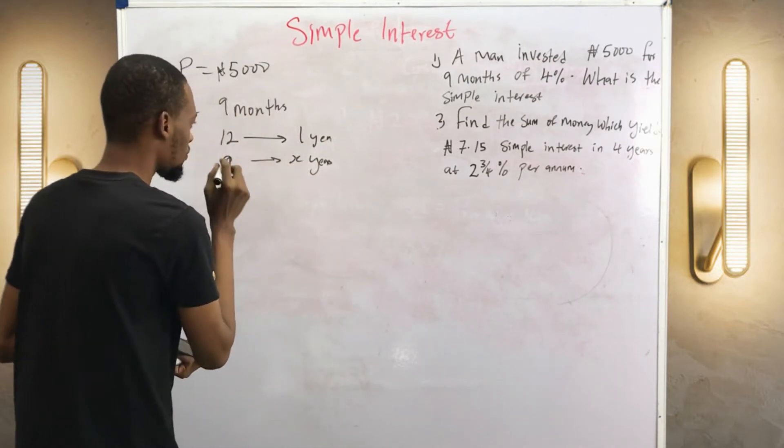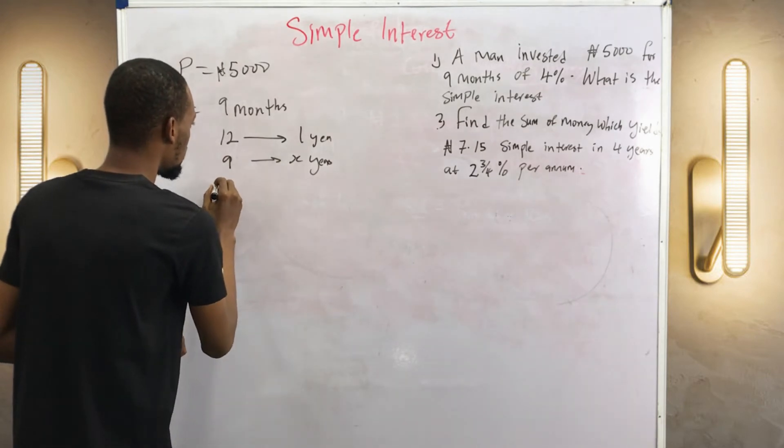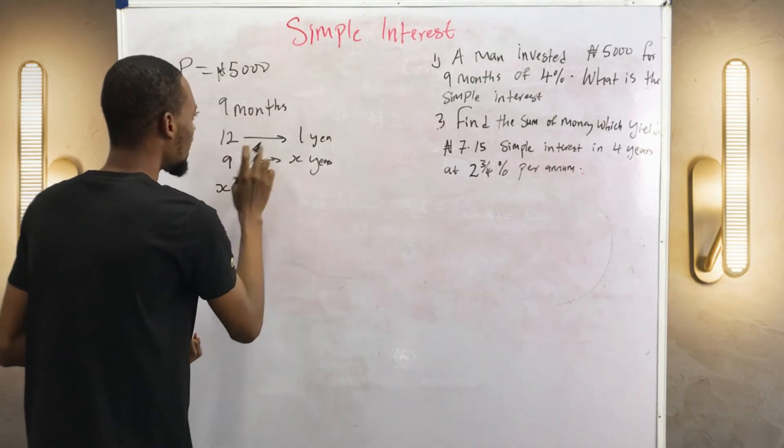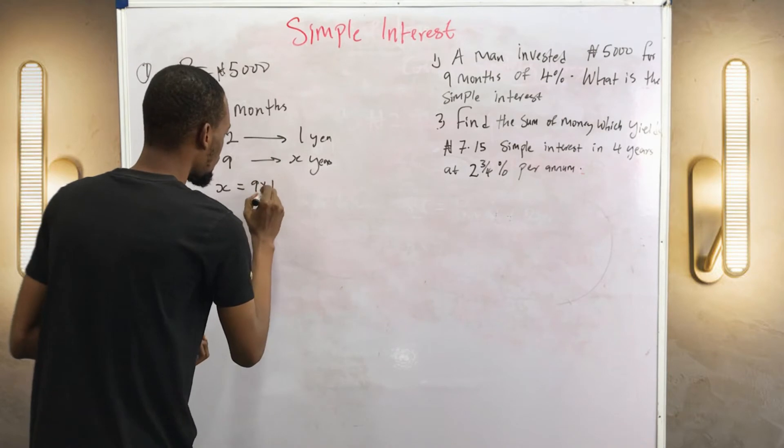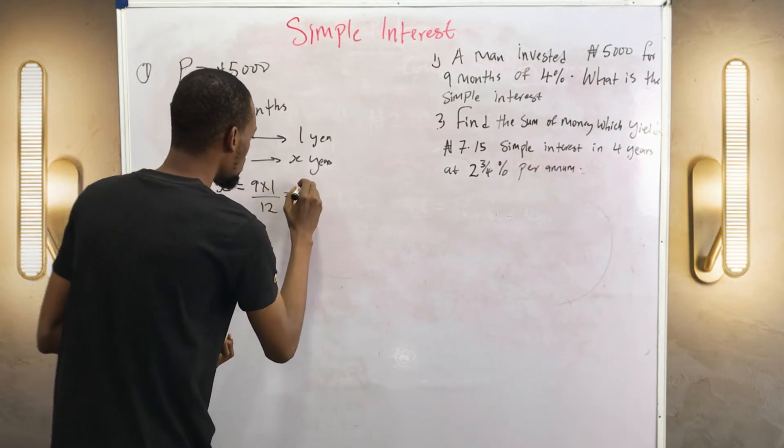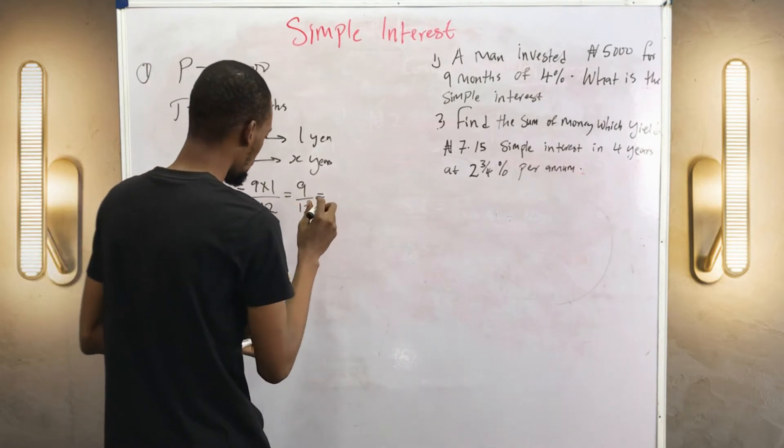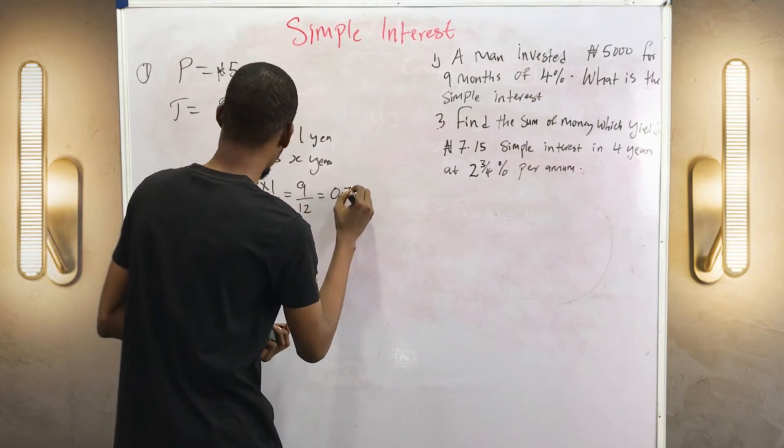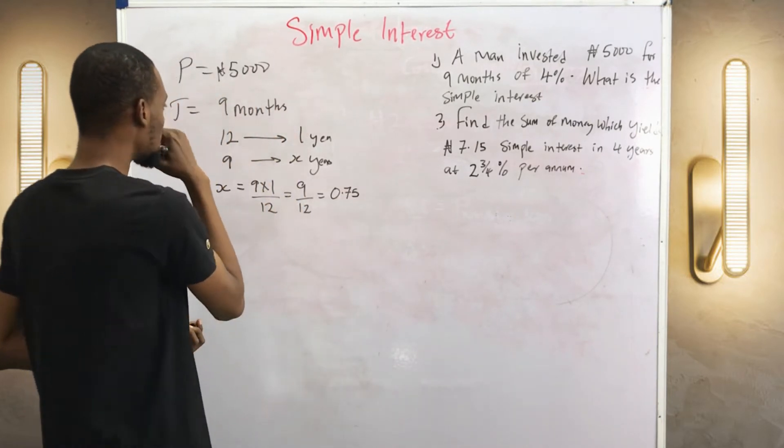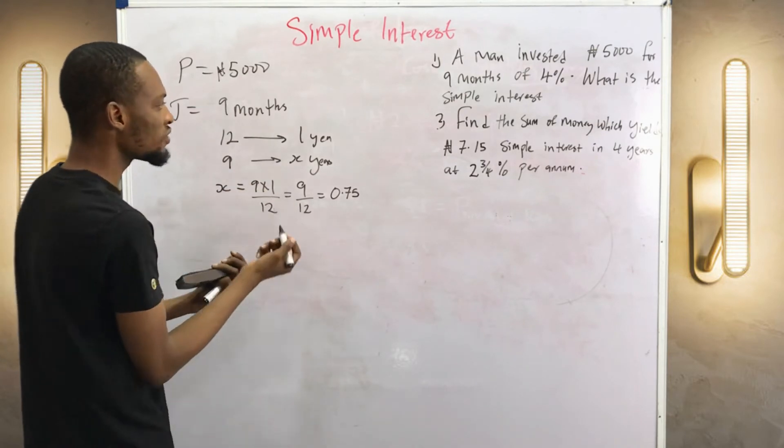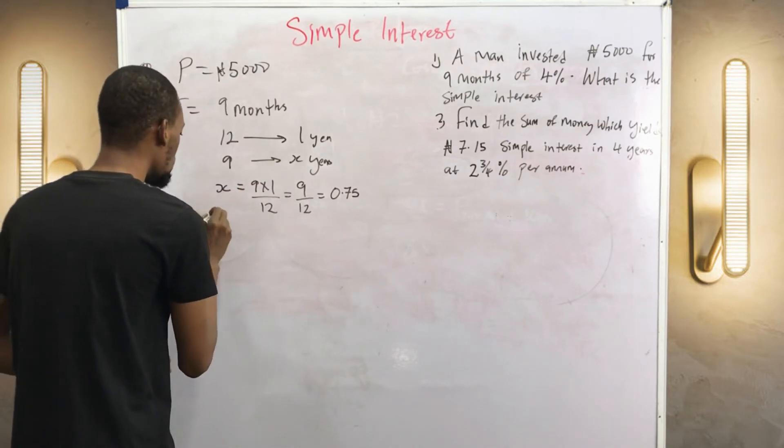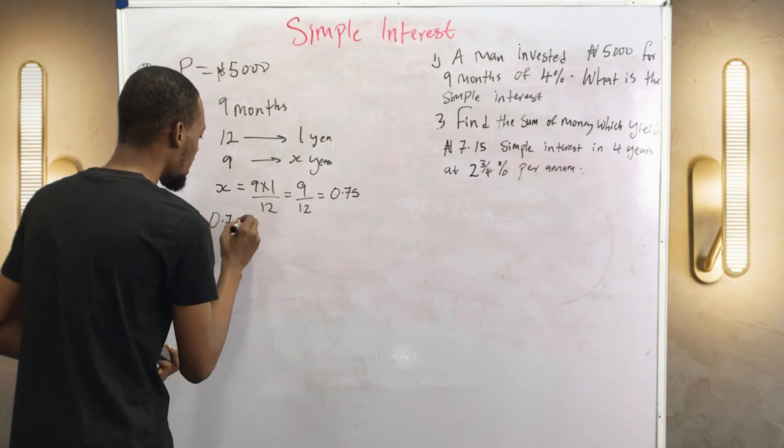X equals nine times one over 12, which equals nine over 12. This will give you 0.75. So nine months equals 0.75 years. So time equals 0.75 years.